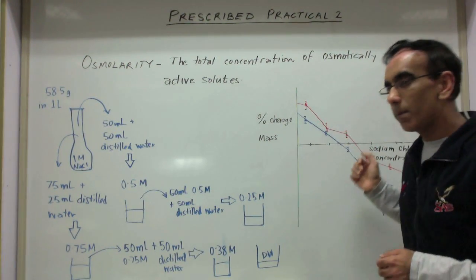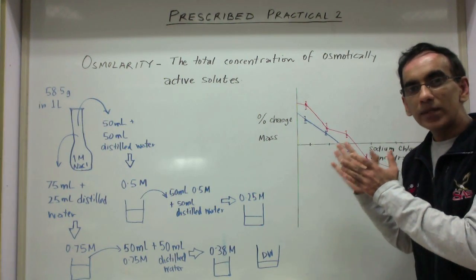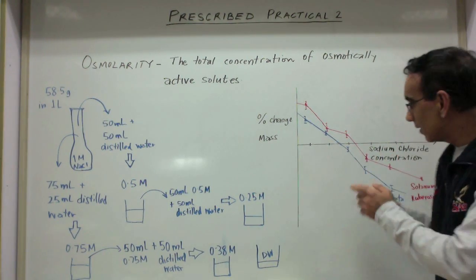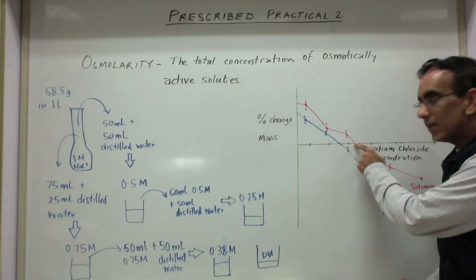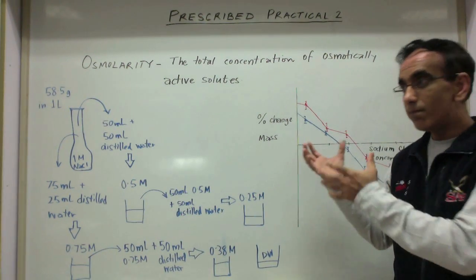Having set all of this up, you can estimate the osmolarity of potato and pumpkin by looking at the point where your graph intersects the x-axis.